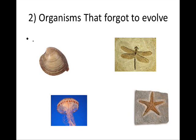Number two: organisms that forgot to evolve. There are plenty of organisms found in the fossil record in layers that are supposed to be hundreds of millions of years old, and the animals are still unchanged. We have examples like the clam, starfish, many insects, jellyfish, and many others.